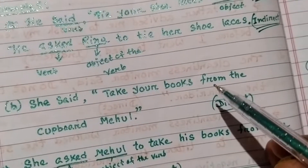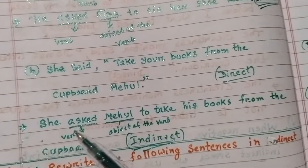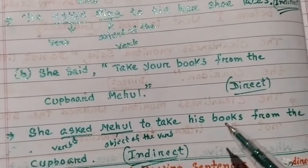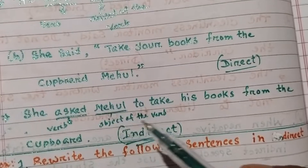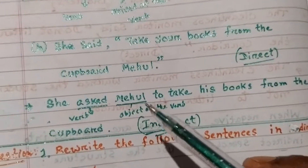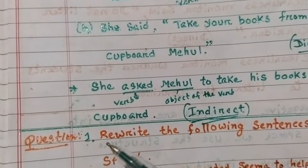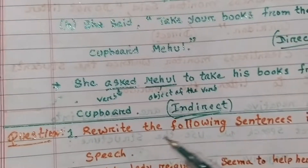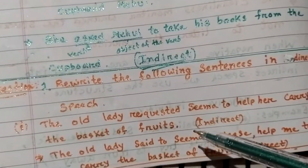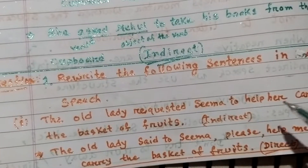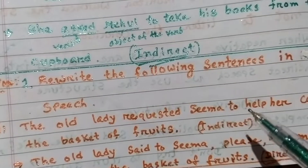Example B: Direct speech — 'She said, take your books from the cupboard, Mehul.' In indirect speech: 'She asked Mehul to take his books from the cupboard.' 'Ask' is the verb and 'Mehul' is the object of the verb. Now, question number one: rewrite the following sentences in direct speech.